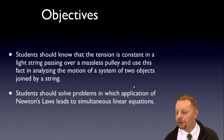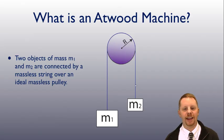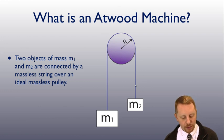So, we'll do this in the context of an Atwood machine. What is an Atwood machine? Well, really, an Atwood machine is a lab apparatus, an experimental setup, in which two objects of mass M1 and M2 are connected by a light massless string to an ideal massless pulley.